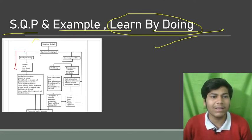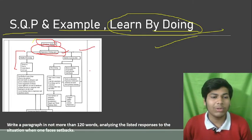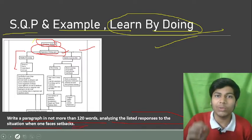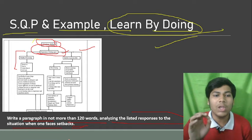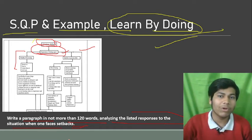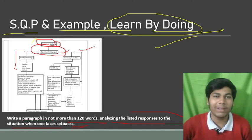It was about experiencing and feeling upset. There was a setback situation and this table type was given. What was the question? Write a paragraph in not more than 120 words, analyzing listed responses to the situation when one faces a setback. So when someone gets a setback, how does it face the situation? Based on that, you had to write a paragraph from this table.